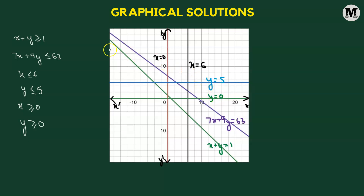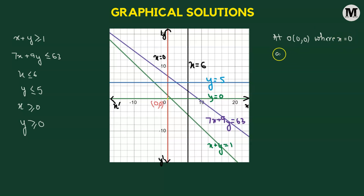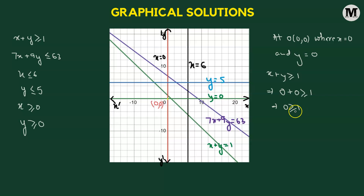Now let's find the solution for each linear inequality. For x plus y greater than or equal to 1, this line divides the xy plane into two regions: above and below. We test the origin (0, 0): substituting gives 0 plus 0 greater than or equal to 1, which gives 0 greater than or equal to 1 — an incorrect statement. So the region containing the origin does not satisfy this inequality; we must take the region lying above the line x plus y equals to 1.